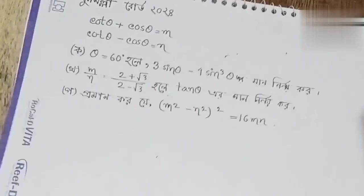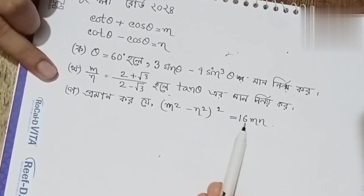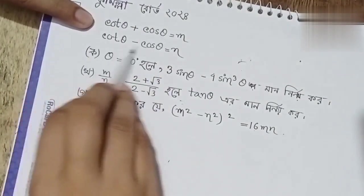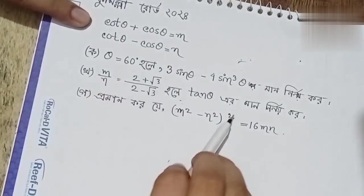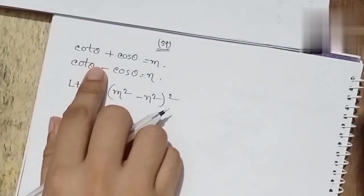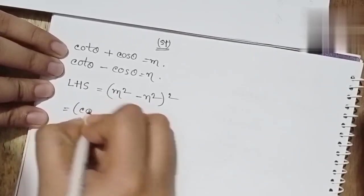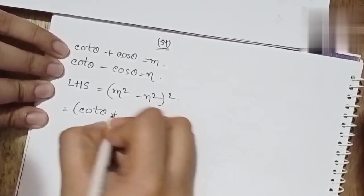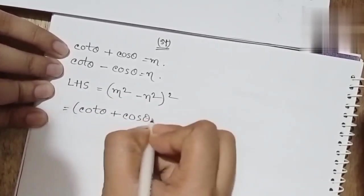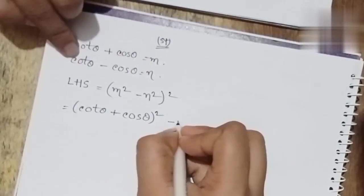So we need to do another step. The expression gives us cot theta plus cos theta, pi minus. We will multiply minus e squared.